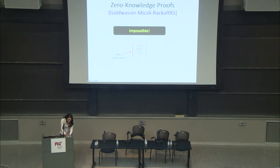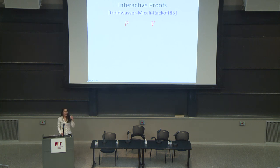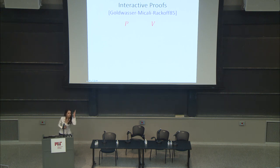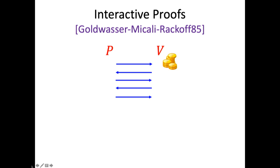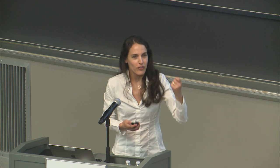Why didn't you learn anything? The reason is because I changed the model of the proof — I used the power of interaction. The prover doesn't just send a one-shot proof; rather, it was an interactive process. Very importantly, the verifier tossed coins. In this example, you swapped or didn't swap with probability one half. And of course, I shouldn't know whether you swapped or not, because then I could cheat. We're really using the fact that the verifier tosses coins, the prover is not aware ahead of time what those coins will be, and the power of interaction.